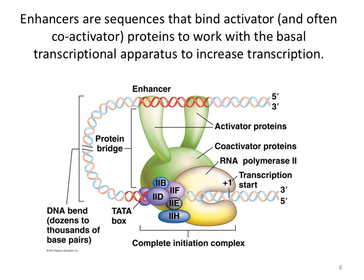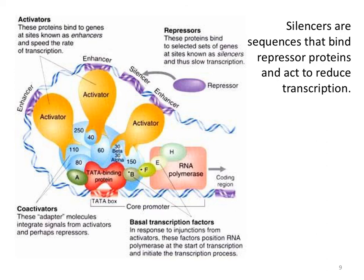Shown in this figure, activator proteins and coactivator proteins in green are associated with the complete initiation complex where RNA polymerase II is ready at the plus-one site. That association facilitates increased and better binding of RNA polymerase II to the promoter, upregulating transcription. In contrast, silencers are sequences that bind repressor proteins and act to reduce transcription. The repressor protein binding to the silencer area can interfere with the binding of activator proteins and enhancer sequences, so one mechanism interferes with the other, ultimately playing a role in regulating transcription.